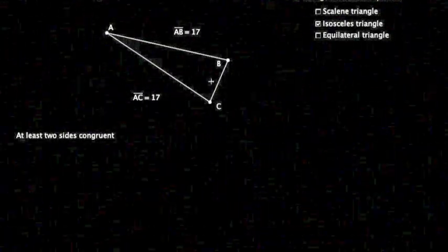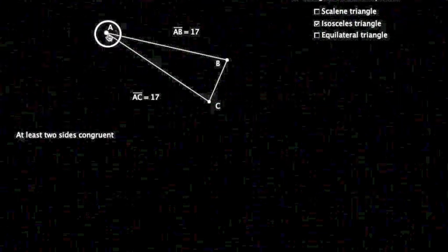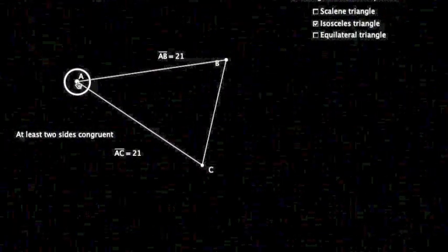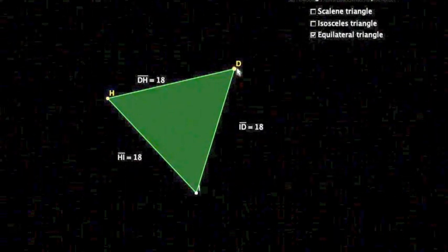Isosceles triangle, at least two sides are congruent. And equilateral triangle, that is when all three sides are congruent.